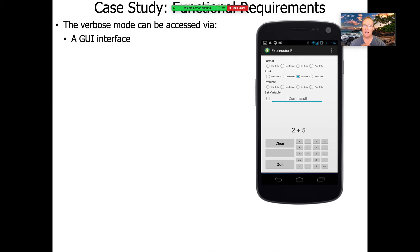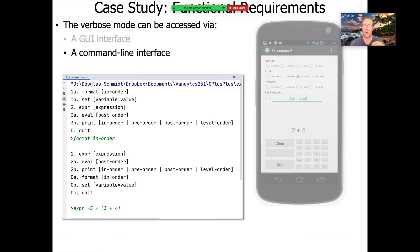Verbose mode is also accessible in a GUI way using Android or on a command line interface where you can go ahead and give it directives like, I want the format to be in order. Here's an expression given using in-order format. Go ahead and print this. Go ahead and evaluate it. And so on and so forth. So we're going to be largely focusing on the command line versions of this stuff, because that's what we have for C++. But just to show the diversity of patterns, there's also a GUI version written in Java that basically implements the same functionality.